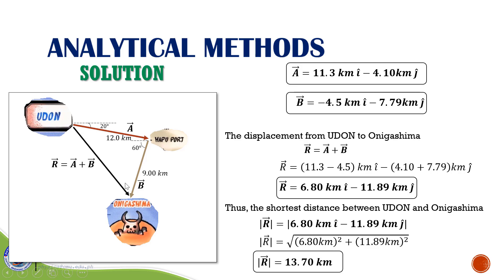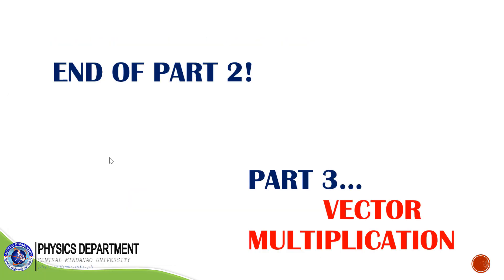The shortest distance between Udon and Onigashima is equal to 13.7 kilometers. Using analytical methods, we solved the distance between these two points. That is equal to 13.7 kilometers. Thank you!